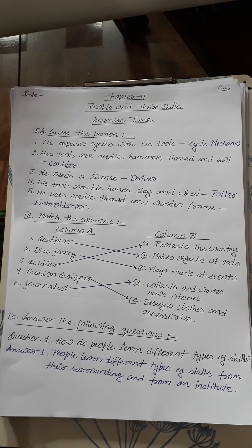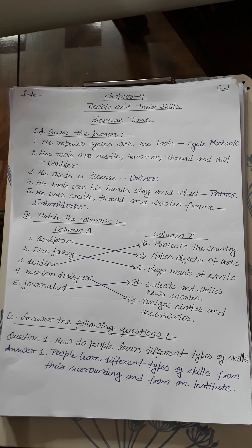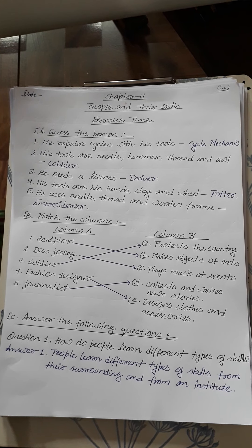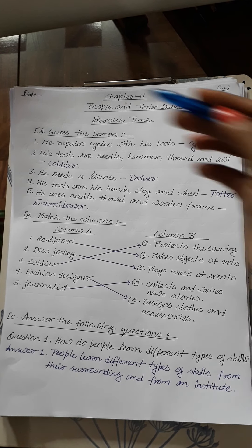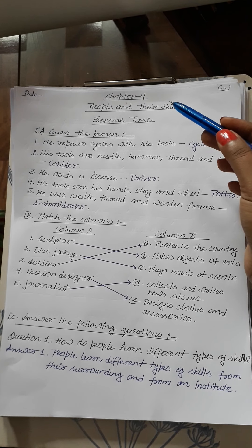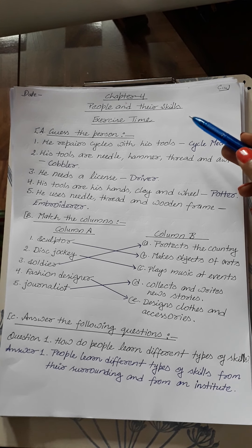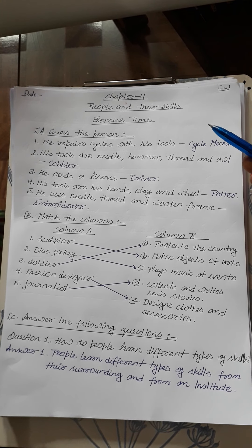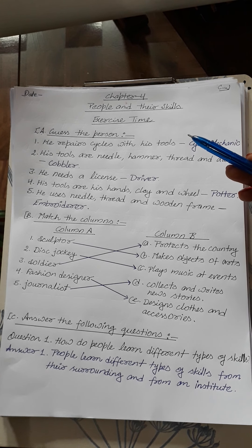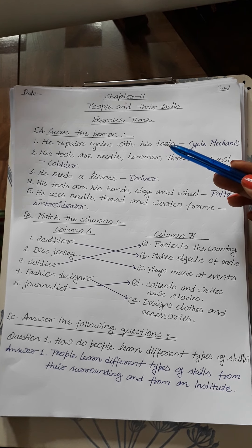Here you can see a worksheet. You have to do this work in your EBS copy. First you have to mention the date and classwork, chapter number — that is Chapter 4 — and name of the chapter, that is 'People and Their Skills'. Then you have to write 'Exercise Time' as the heading.